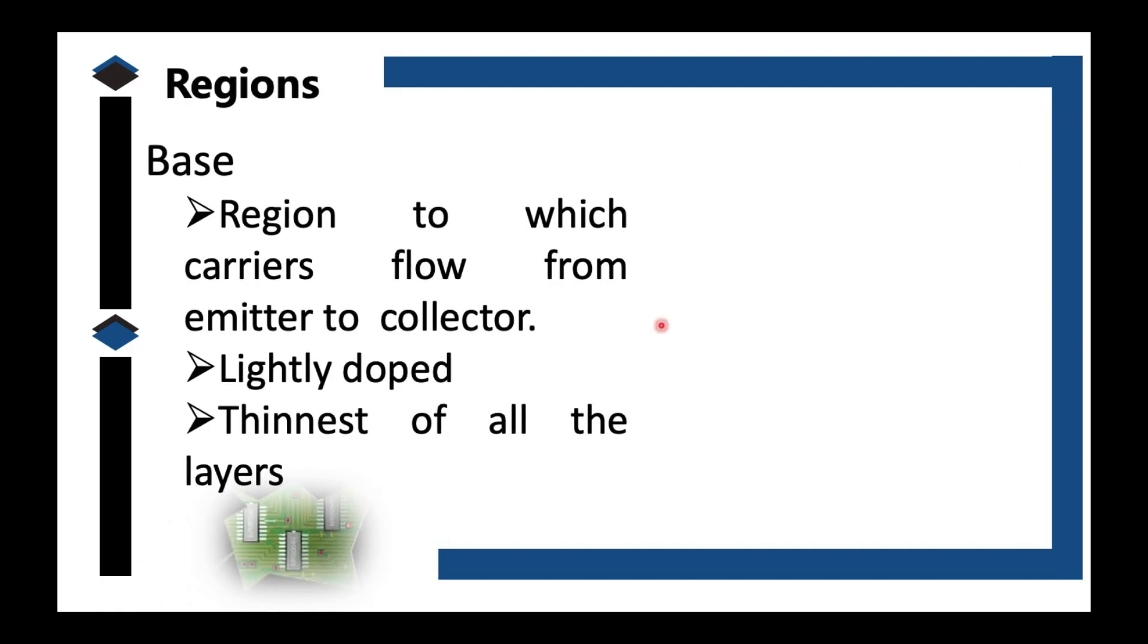So let's move forward to the three regions of BJT: the base, the emitter, and the collector. The base, as depicted in the picture, it is the thinnest of all the layers. At the same time, it is only lightly doped. Lightly doped means the current from it will be small because you have few charge carriers there. Base is also the region to which carriers flow from emitter to collector. So our current cannot jump, it passes through.